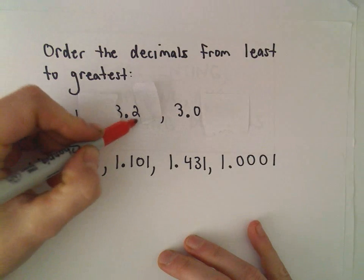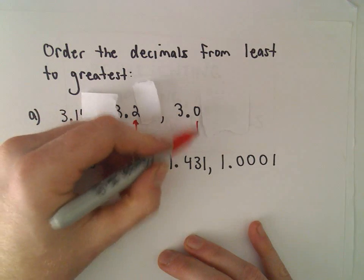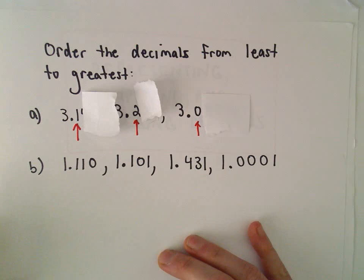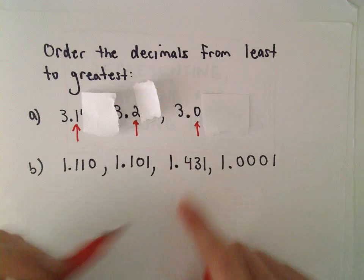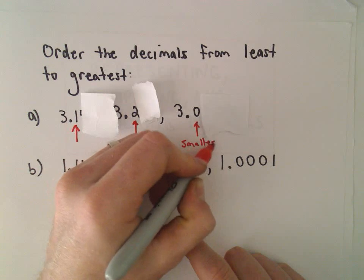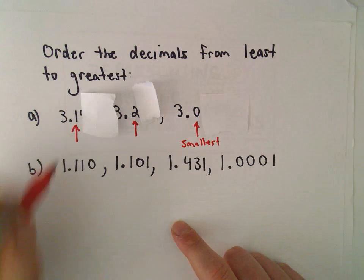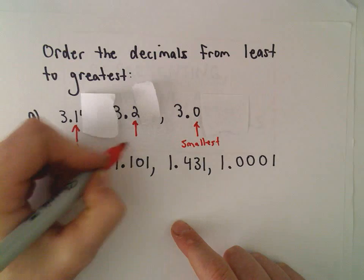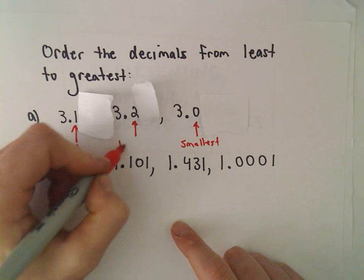So 1, 2, and a 0. And I'm thinking, which of those digits is the smallest? Well, this is certainly the smallest. That's absolutely the smallest one. And then that would be the second smallest, and this 3.2 would be the largest.